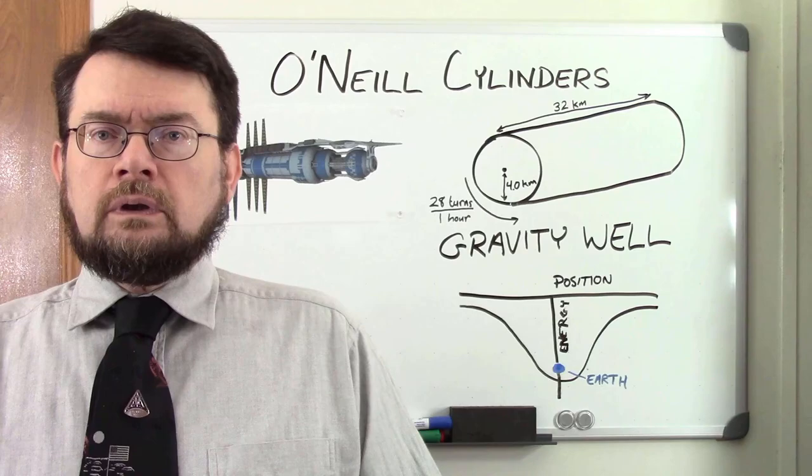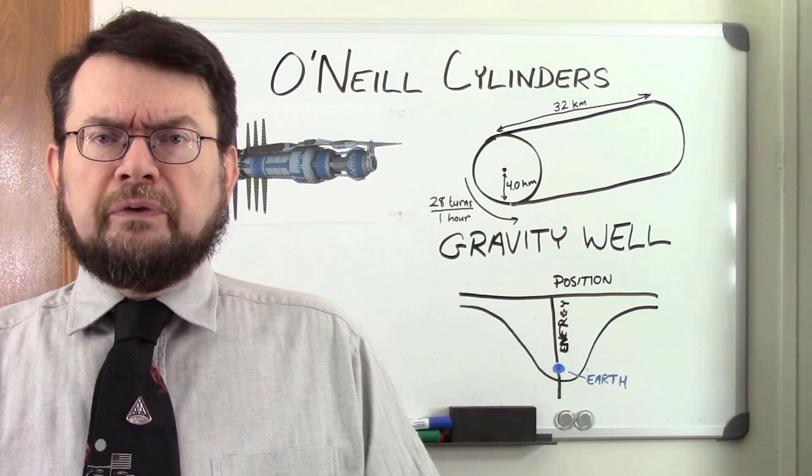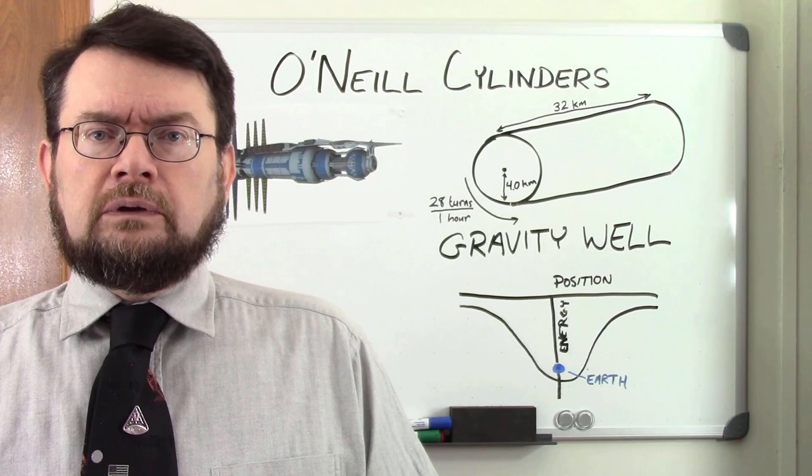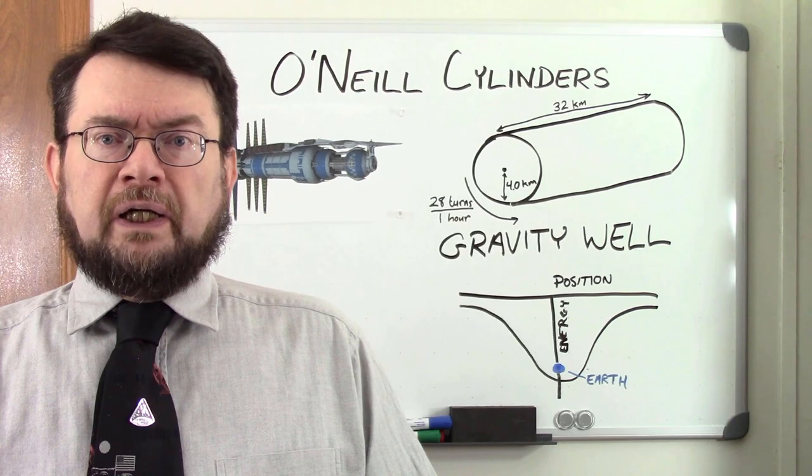Well, O'Neill's original design had large windows to let in the light, but it might be more practical to enclose the entire system and use artificial light. If we've developed fusion power by then, we could use that to power the lighting. Otherwise, we could set up large solar panels outside the station to provide power.